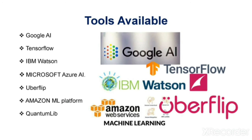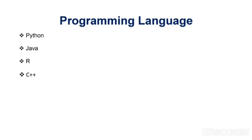The open source tools include Google AI, TensorFlow, IBM Watson, Microsoft Azure AI, Uber, Amazon ML platform, and Quantum Library. The four basic programming languages used in AI are Python, Java, R programming, and C++.